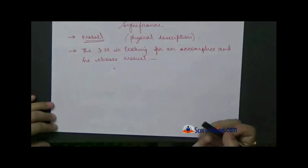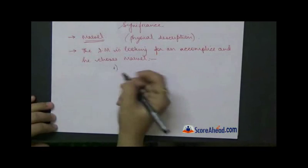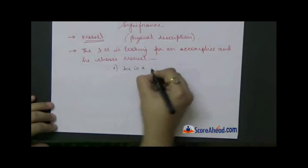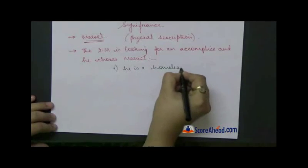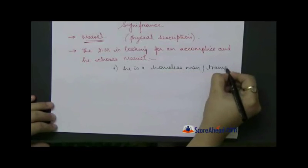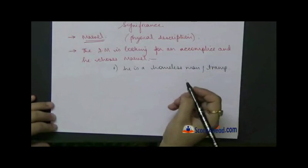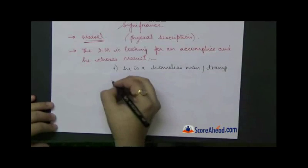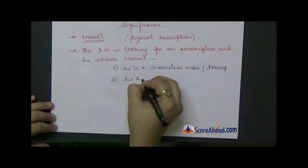And the first reason would be that he is a homeless man, he is a tramp, he has no permanent residence, so nobody would be looking for him actually. And he has no family and no loved ones.